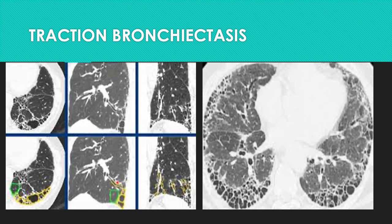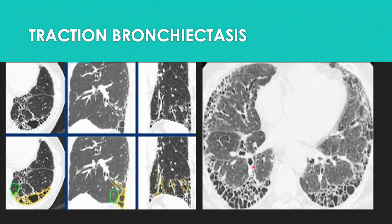Honeycombing is visible in the periphery along with dilated bronchi which are being pulled because of fibrosis. There is a lot of architectural distortion. Whenever there's fibrosis, not only are the bronchi and bronchioles pulled, but the pulmonary vessels are also pulled toward the fibrosis. So when we look at pulmonary fibrosis in UIP, we look at honeycombing, traction bronchiectasis, and all the architectural distortion. I will be doing a separate video on ILD patterns in much more detail.